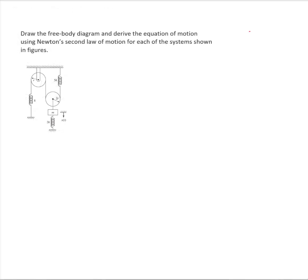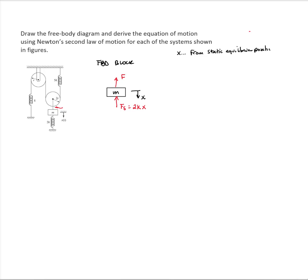Now let's solve the second problem — this system of two pulleys and a block. Let's draw the free body diagram of the block. We have the force of the spring. If I assume the displacement to be downwards, I will draw the spring force going upwards. The spring force will be 2k times the displacement of the block. I also have a tension force upwards. I will not draw the weight because it cancels with the static deflection — I will measure x from the static equilibrium position.